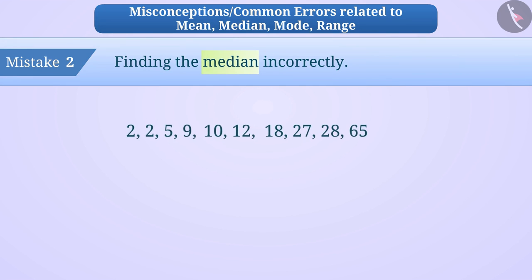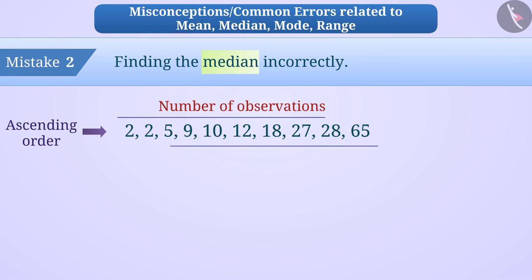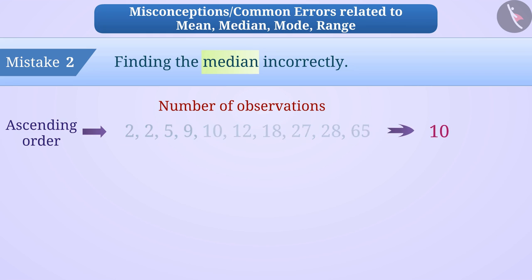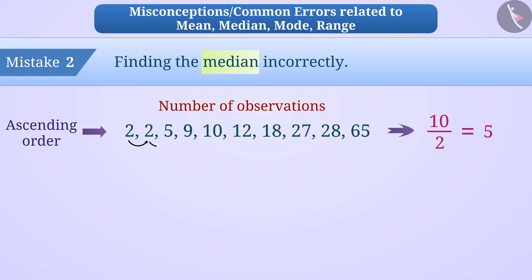Mistake 2. Now look at this group of numbers. Here the observations are in ascending order and the number of observations is 10. Some children divide the number of observations by 2 to find the place of the median. Like here, 10 divided by 2 is equal to 5. So they think that the median is the number on the fifth place, that is, 10. Which is a misunderstanding.